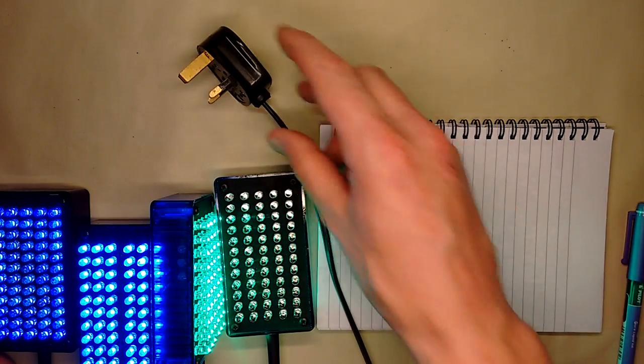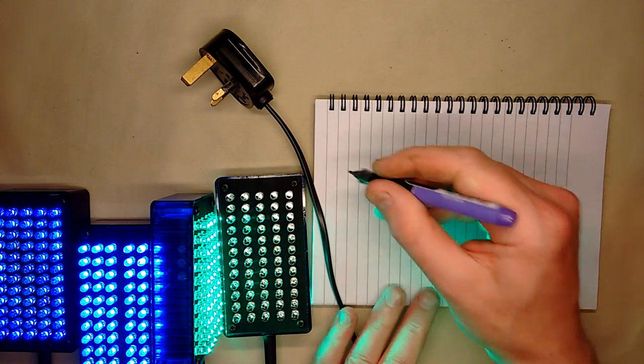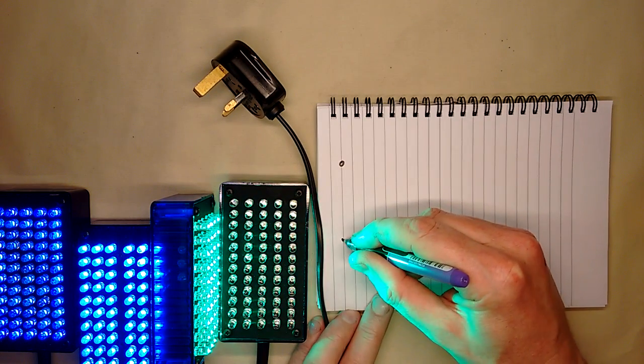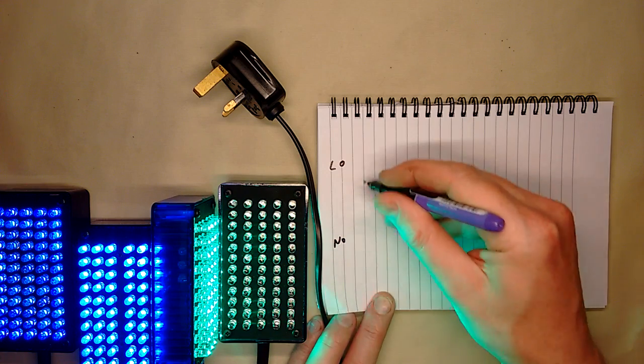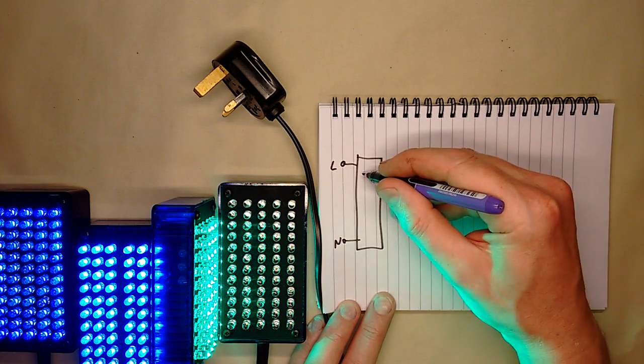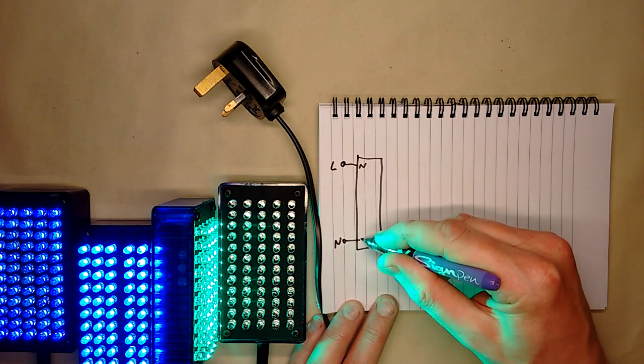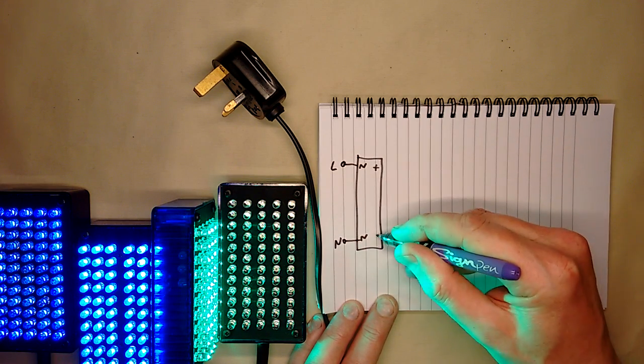So the circuit diagram is incredibly simple. Live and neutral, the mains, they come in and they go to a bridge rectifier straight into the bridge rectifier based on discrete diodes. So that's the AC in plus and minus, that's the output.